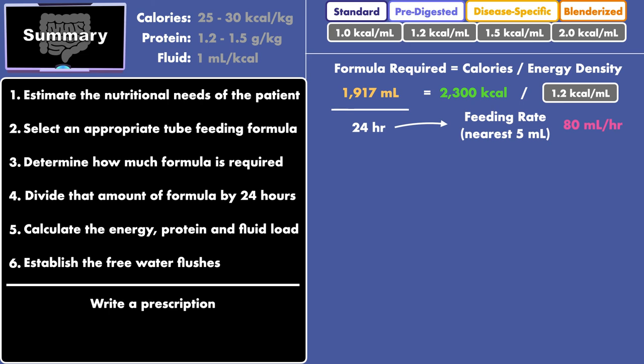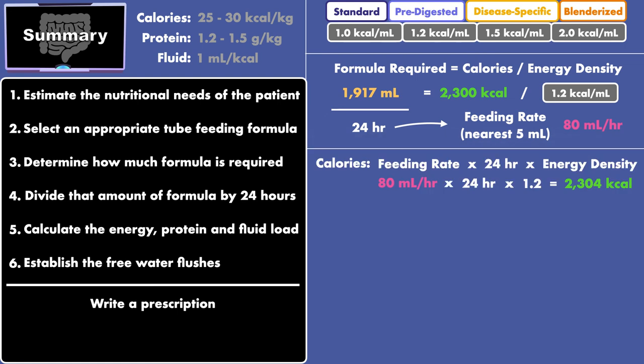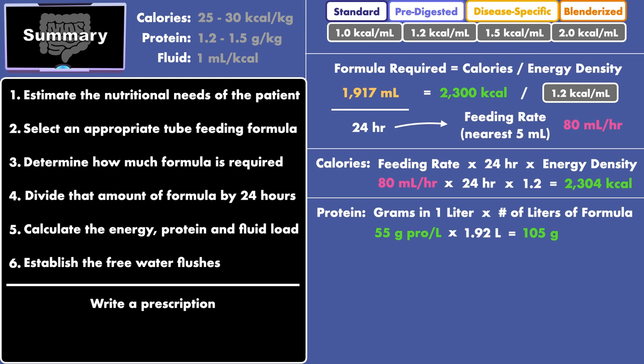At this stage, you calculate the energy, protein, and fluid load. For calories, multiply the feeding rate by 24 hours, and then multiply that result by the energy density. For protein, multiply the grams of protein in 1 liter of formula by the number of liters of formula given per day. For fluid, multiply the milliliters of formula given per day by %H2O times 0.01.